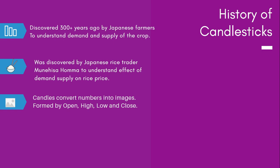Another advantage of candlesticks is that they work on any time frame — 5-minute charts, 15-minute charts, or one-day candles. If you're an intraday trader you can use shorter time frames like 1-minute, 5-minute, or 15-minute candles. If you're a positional trader you can go for higher time frames like a one-day or one-week candle. A one-minute candle represents what happened in that one minute; a one-day candle tells you what happened in that entire day.